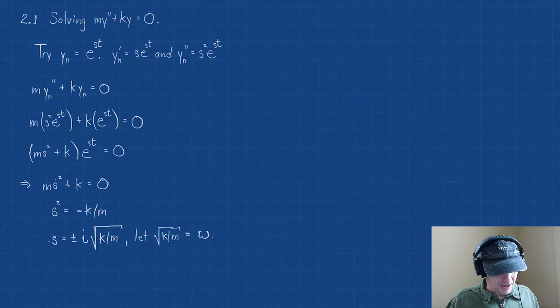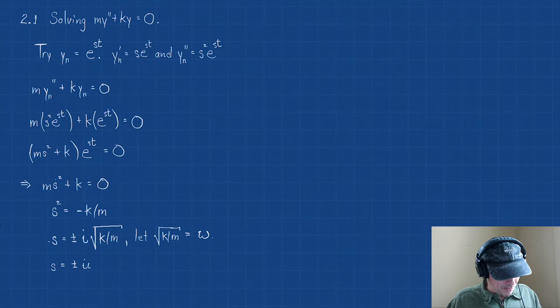We're going to use that Greek letter omega. So we're going to let √(k/m) = ω, just for the sake of clarity and simplicity in writing. So in other words, s = ±iω.